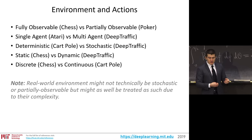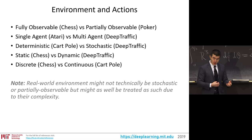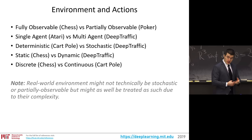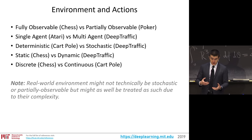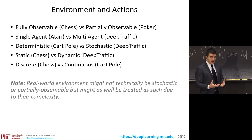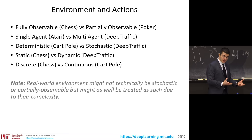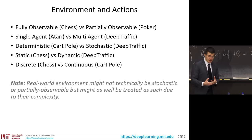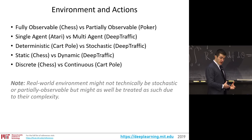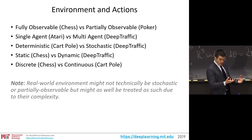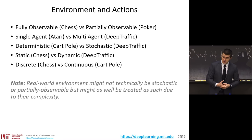The environment could be fully observable or partially observable — like in poker. It could be single-agent or multi-agent — Atari versus driving like Deep Traffic. Deterministic or stochastic. Static versus dynamic — static as in chess, dynamic in driving and most real-world applications. Discrete versus continuous — like games such as chess, or continuous like cart-pole, balancing a pole on a cart.